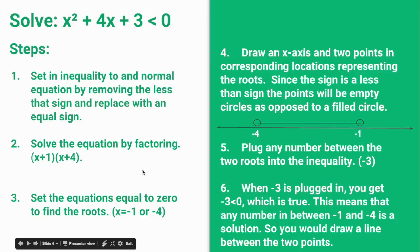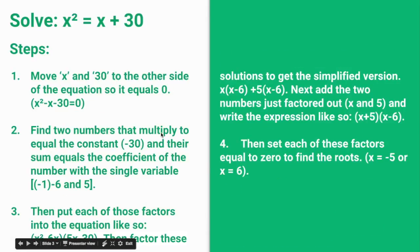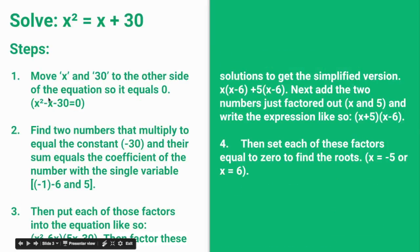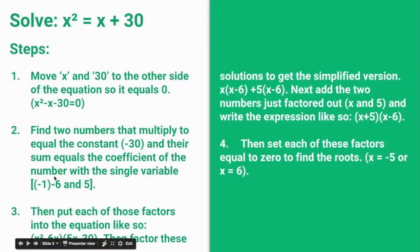The next step is to find two numbers that multiply to equal the constant and whose sum equals the middle coefficient, which is negative 1 in this case. The two numbers would be negative 6 and 5, because those two numbers when multiplied equal negative 30 and add to equal negative 1. So we know that negative 6 and 5 can be factors.